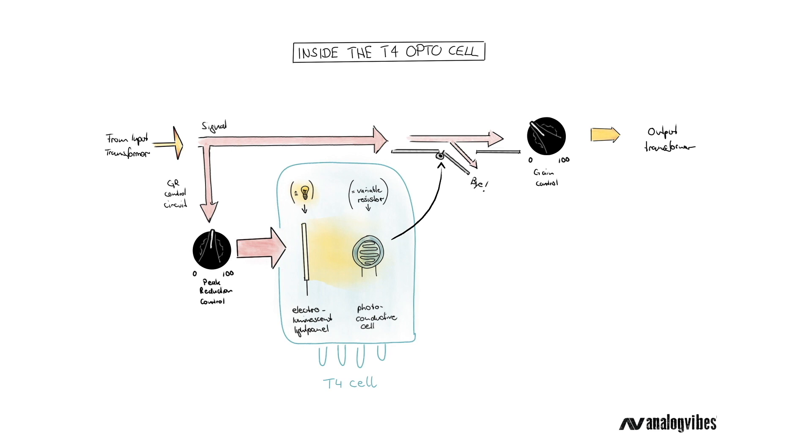Now we only have to turn up the gain knob to make up for the loss in gain introduced by the compression, and as you can see, our skinny and peaky signal from the beginning turns into a fat and smooth signal before it finally hits the output transformer.